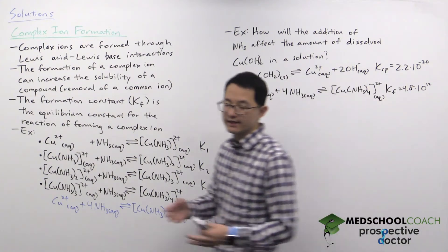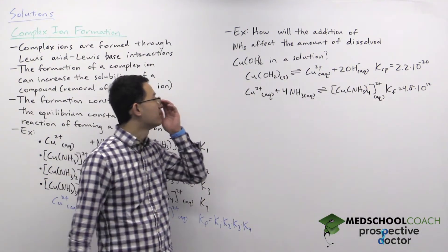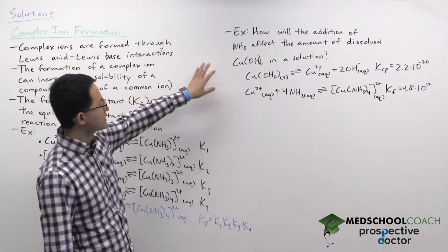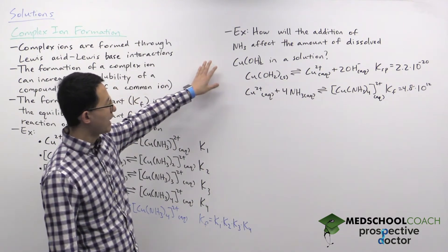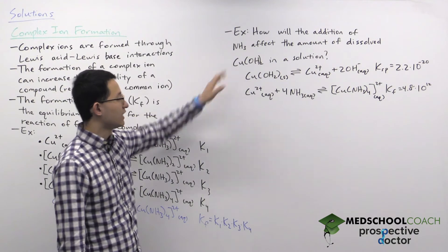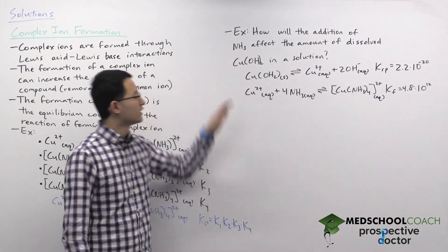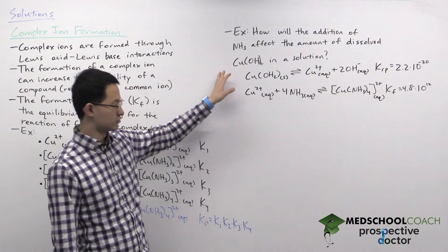Okay so now let's take a look at an example. In our example we have a situation where we want to know how will the addition of ammonia affect the amount of dissolved copper hydroxide in a solution.